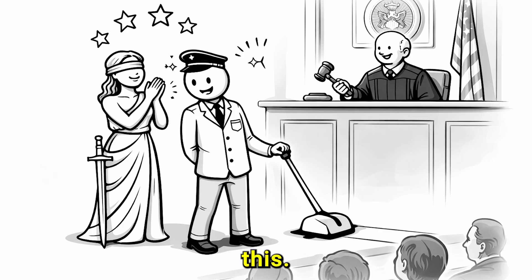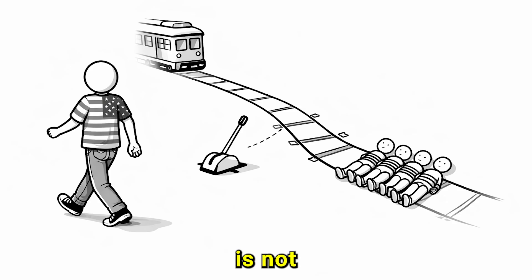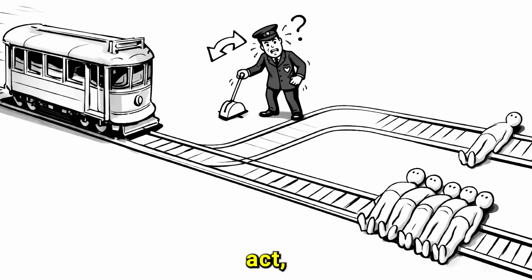So the key difference is this. A normal citizen is not legally required to act, even if doing nothing feels wrong. A switchman is required to act, and doing nothing could itself be a crime.